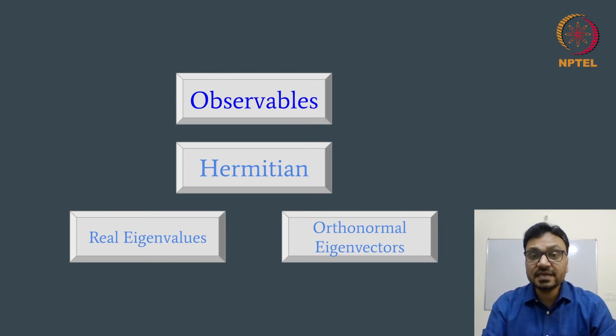Observable is something that can be measured in a lab. Therefore, the characteristic values of the observables, that are the outcomes of the measurement, should be real and the outcome itself should be independent. Hermitian operators satisfy these requirements for the observables in quantum mechanics because of their real eigenvalues and orthonormal eigenvectors.